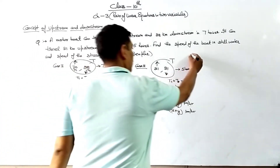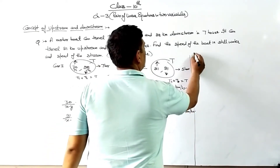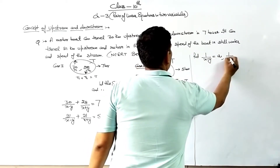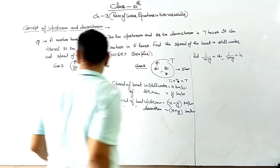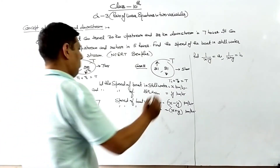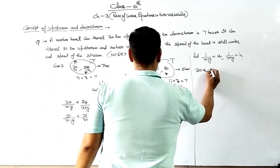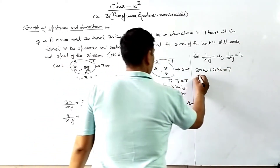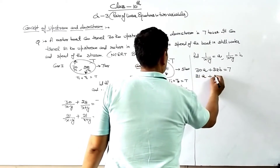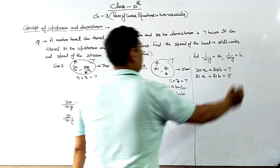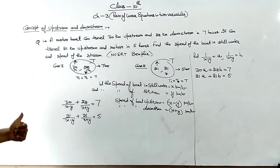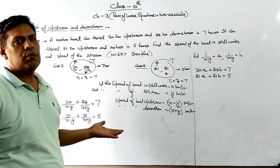Now we substitute: let A equal 1 upon (x minus y) and B equal 1 upon (x plus y). So these equations become: 30A plus 28B is equal to 7, and 21A plus 21B is equal to 5. Now you need to solve these using substitution, elimination, or cross multiplication.